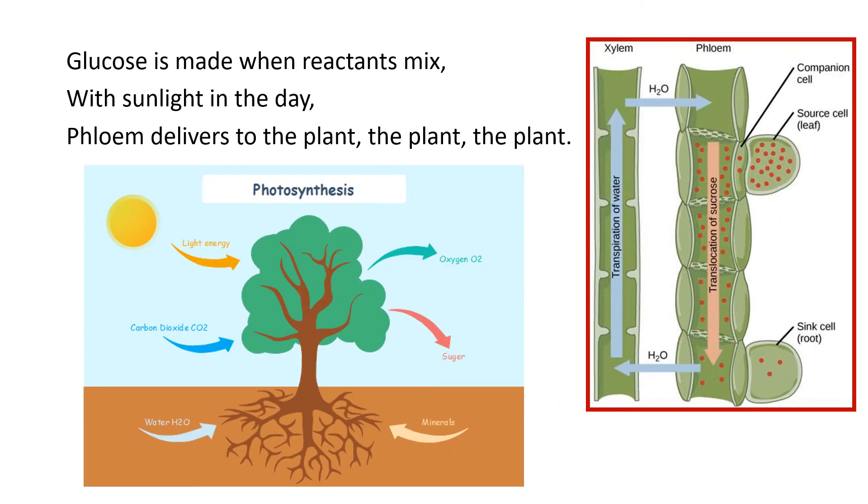Glucose is made when reactants react with sunlight in the day. Stomata delivers to the plant.